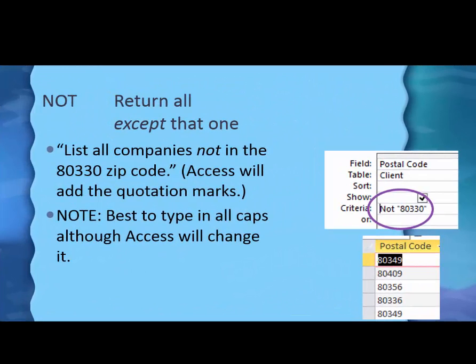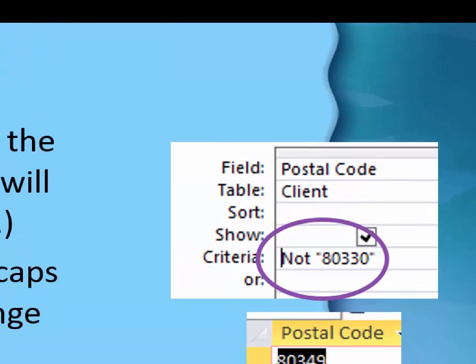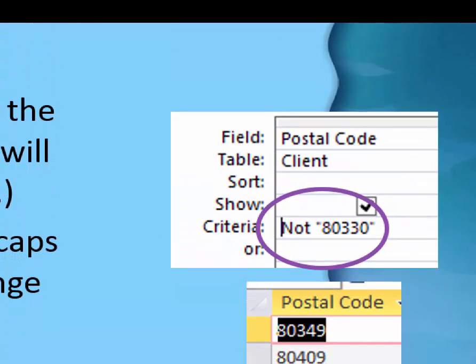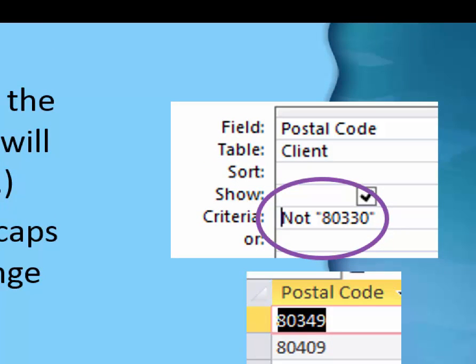The third one, then, is NOT, and it says return everything except that one. So if I said list all companies not in the 80330 zip code area, I can type, you should type in all capital letters, but the computer will change it to caps and smalls.